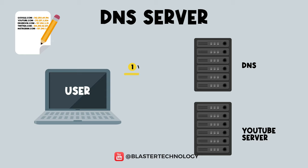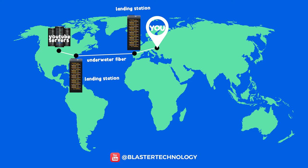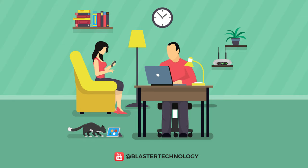From here, this data request that you made is transmitted to the respective server and the data transfer to you starts. The data flows through the fiber optic cable system in the form of light pulses and thus reaches your router. From here, the data is transmitted by the router in the form of electrical signals via internet cable or Wi-Fi.